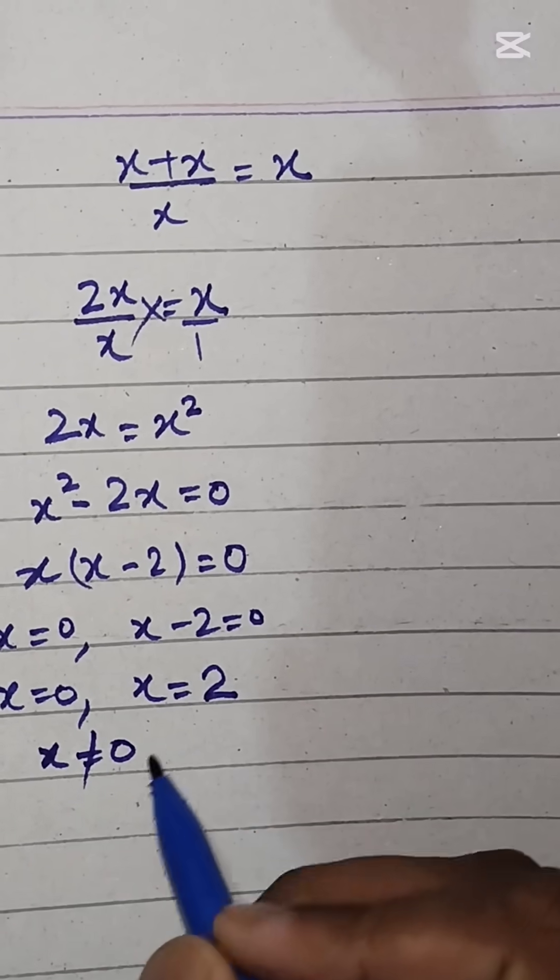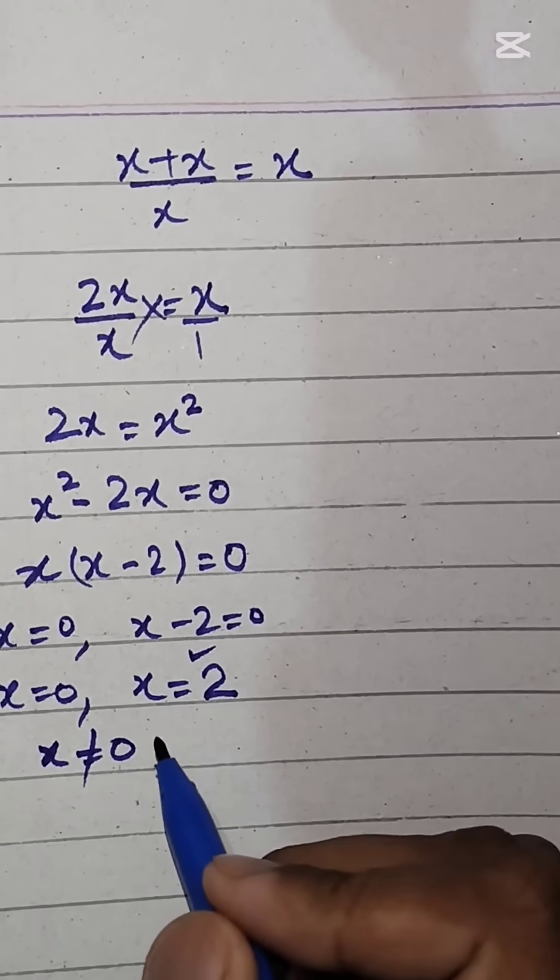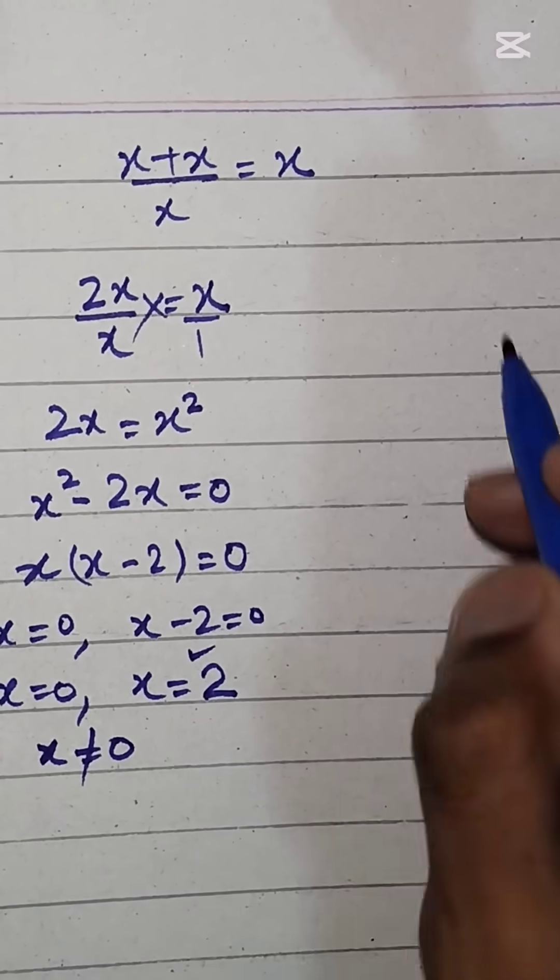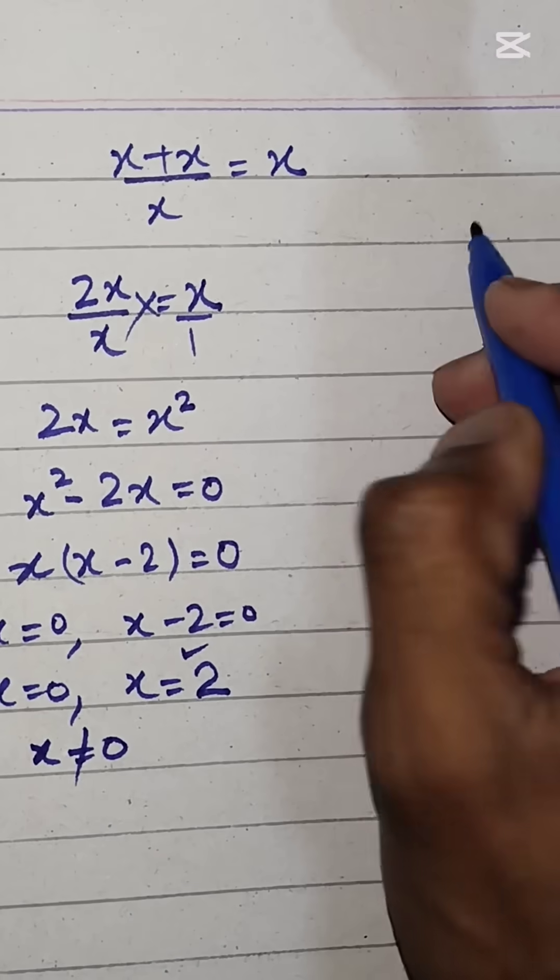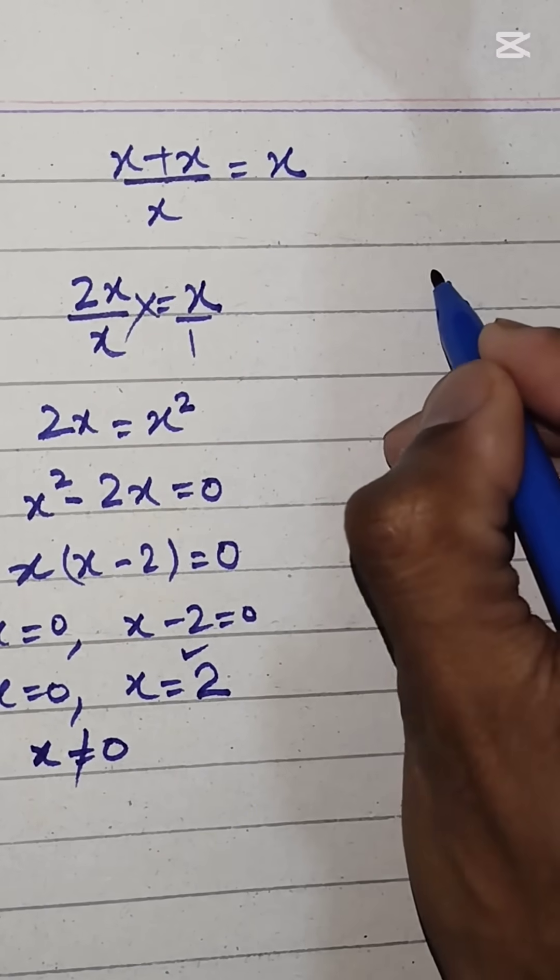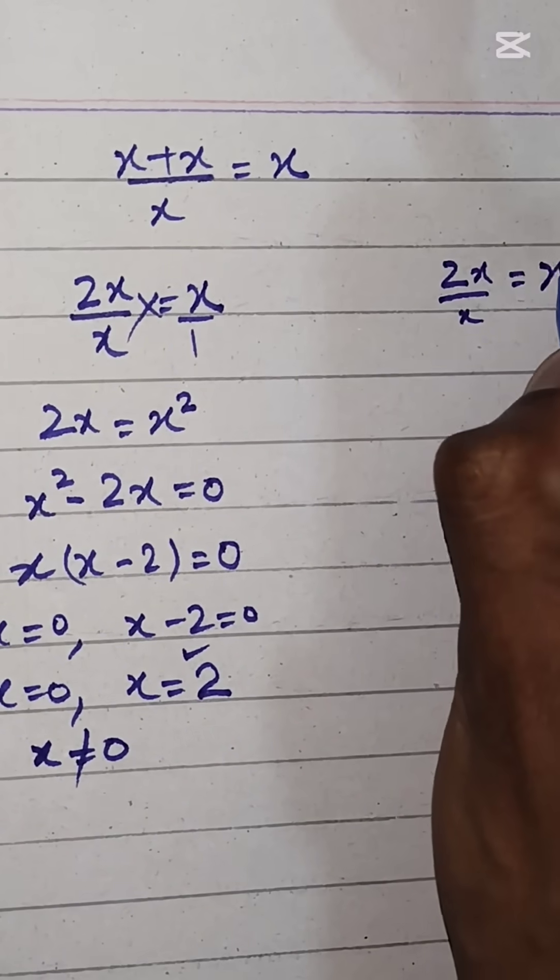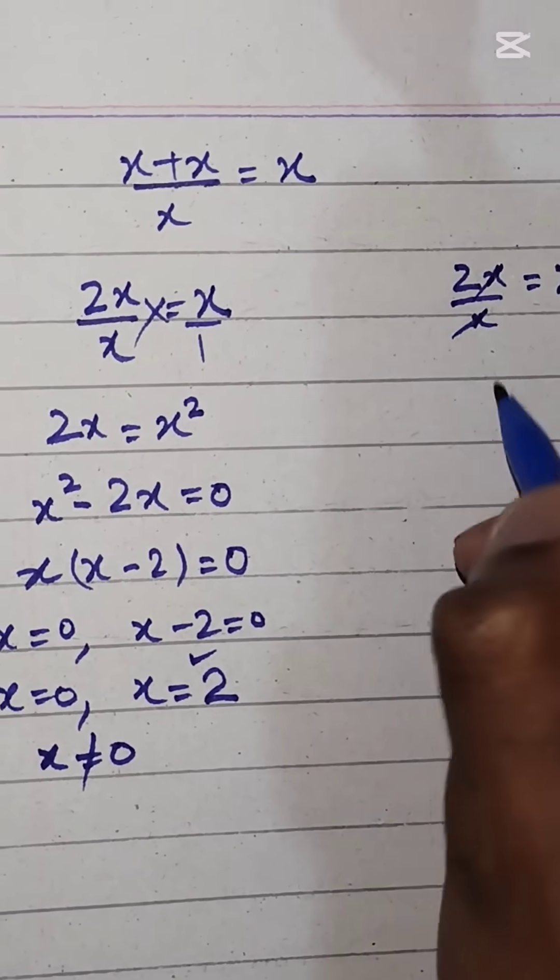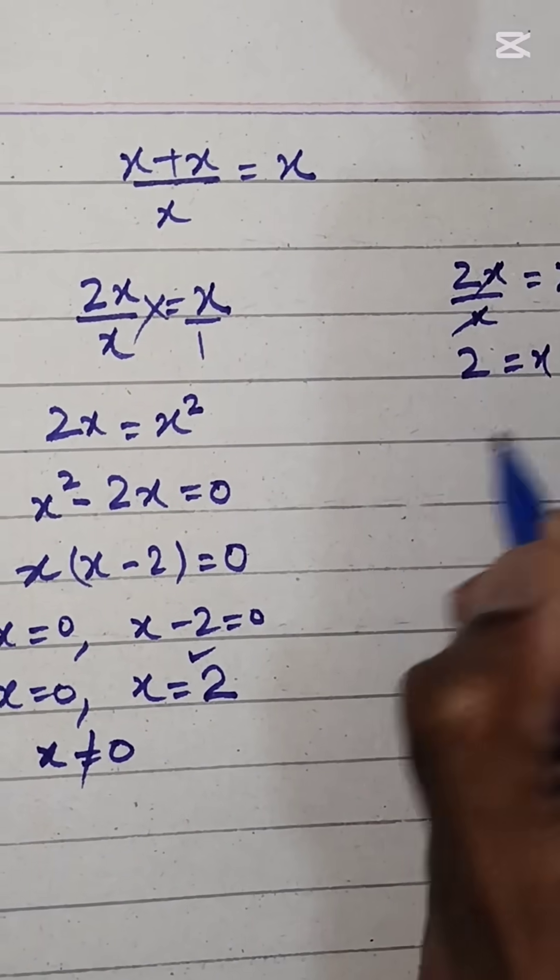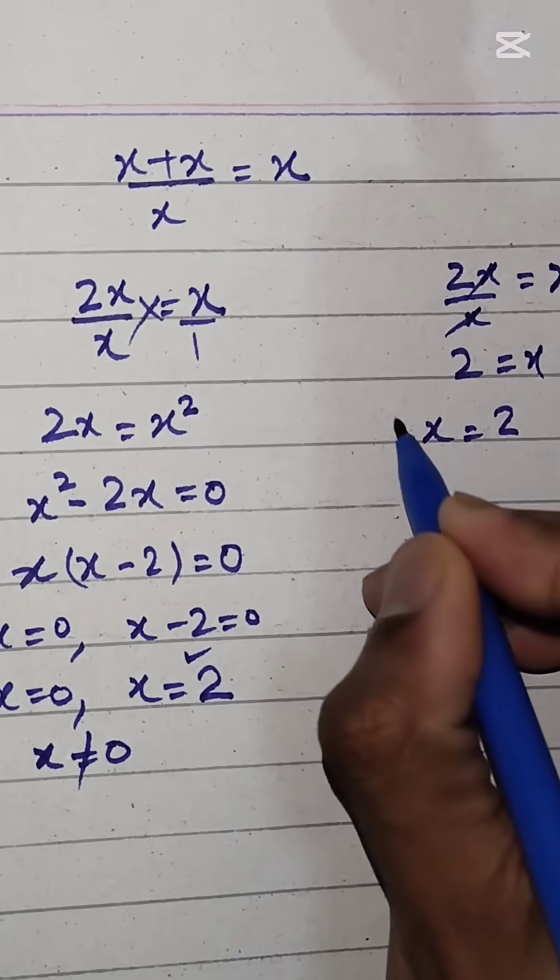We cannot consider x equals 0. We only take x equals 2, so be careful while solving this. Alternatively, we can solve it simply: 2x over x equals x. The x cancels, so 2 equals x, meaning x equals 2. This is the value of x which is defined.